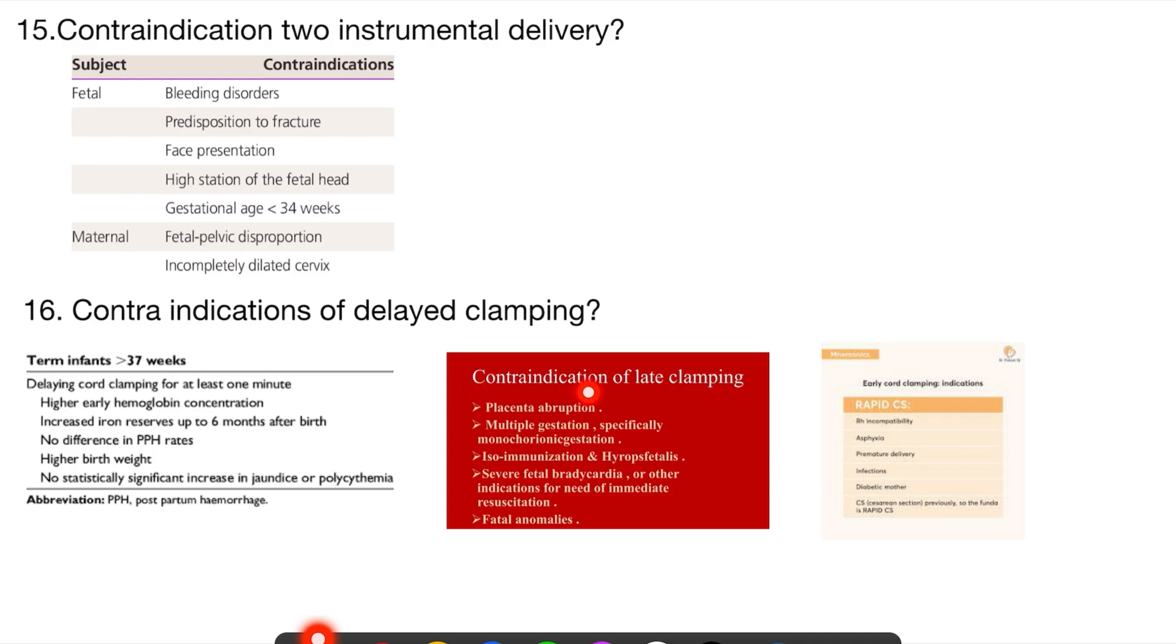The question asked us: what are the contraindications of late clamping? Abruptio placenta, multiple gestations, isoimmunization, severe fetal bradycardia, or fetal anomalies—all these are contraindications of late clamping.